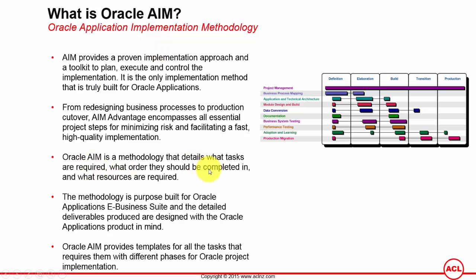Oracle AIM is a methodology that details what tasks are required, what order they should be completed in, and what resources are required. As shown in this diagram, it links to all the tasks executed in the definition phase under each of the processes listed. For example, in the project management process under definition, a task could be to define a project plan. Under the business process mapping process in the definition phase, a task could be to identify the client's present requirements and document their present business process flows.